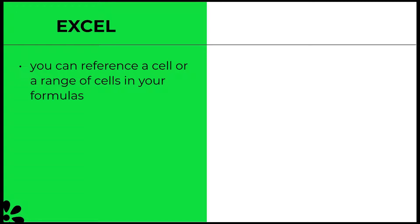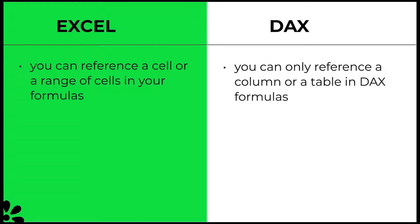DAX is a formula language used in Power Pivot and it is similar to Excel functions. The major differences: in Excel, you can reference a cell or a range of cells in your formulas. However, you can only reference a column or a table in DAX formulas.